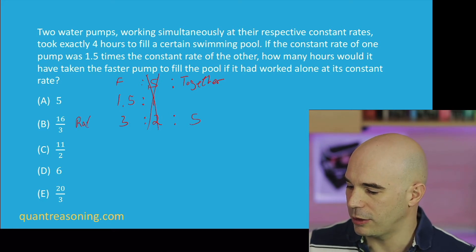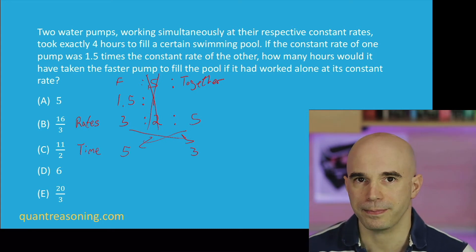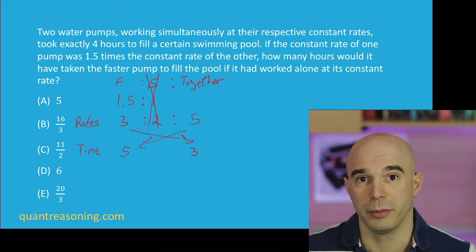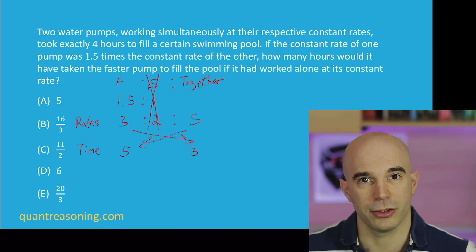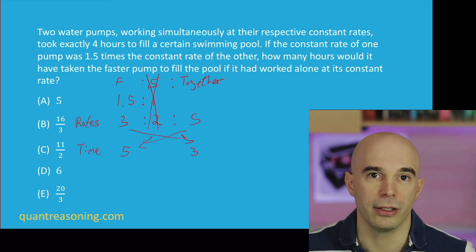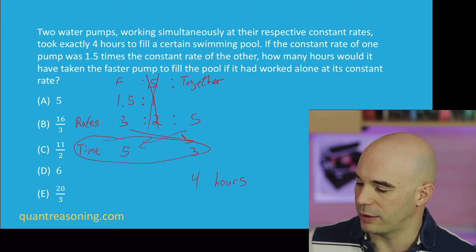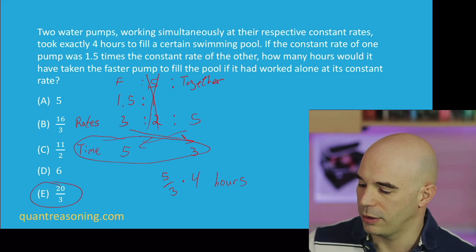If this is the ratio of the rates between the fast pump and the two pumps together, then the ratio of time would be the reciprocal — because the faster you are, the less time you take. So the fast pump will take five-thirds as long as they do together for whatever job. Together, they take three-fifths as long as the fast pump would take on its own. In our case, we know they take four hours together, and from my ratio I can see it's going to take five-thirds as long. So that's my answer: five-thirds of four. Choice E.